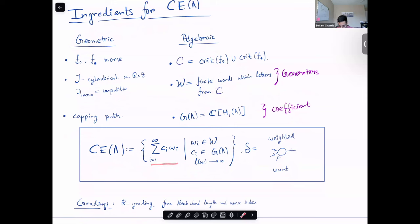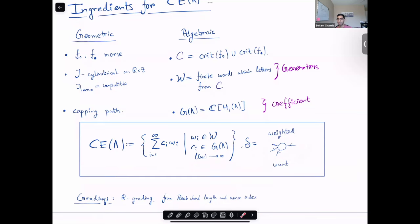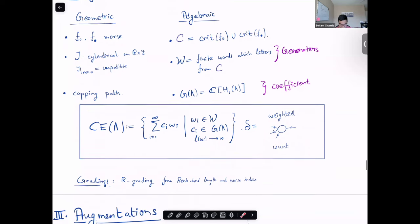With this, we can now finally define the Chekanovic-Eliashberg algebra. These are just infinite series of this form, where w_i is a word, c_i is a coefficient, such that the length of the word goes to infinity as you increase the index, and the differential counts weighted holomorphic treed disks with one input and multiple output. So, as you can see, this algebraic object is quite beastly to look at, and computing is quite hard. It has infinitely many generators, infinitely many characters, because the space of Reeb chords has infinitely many connected components.